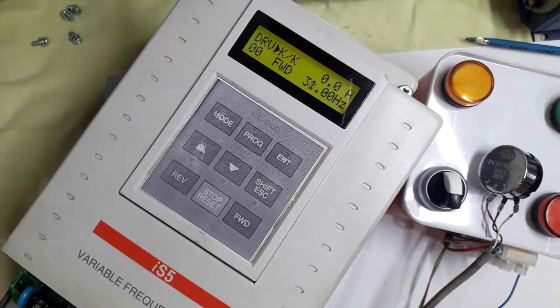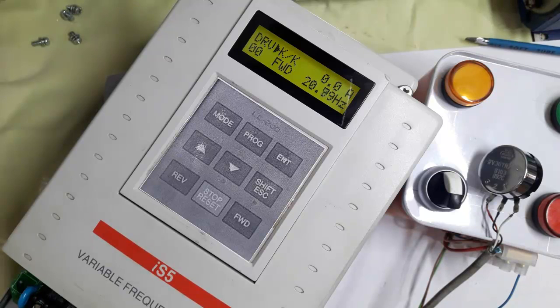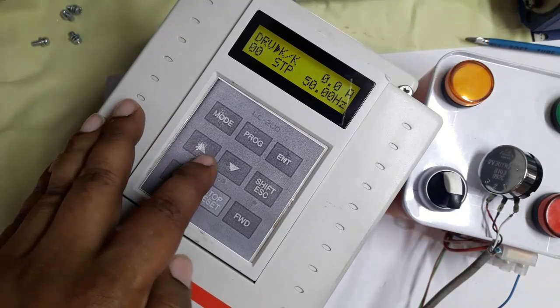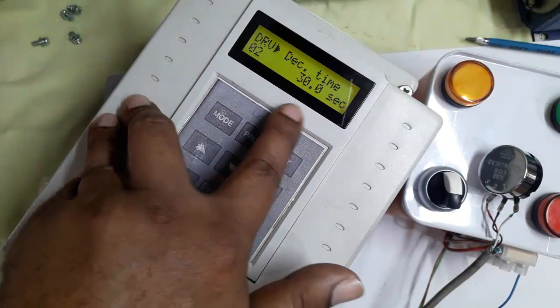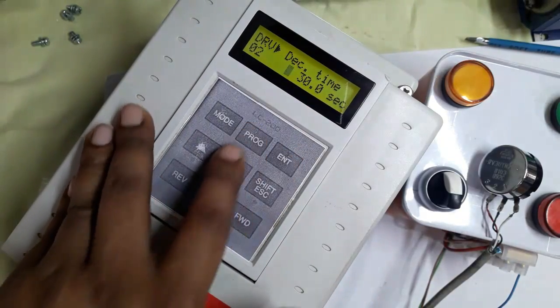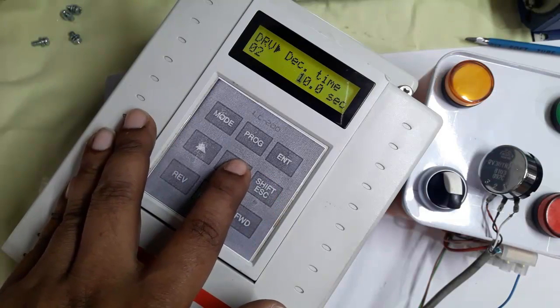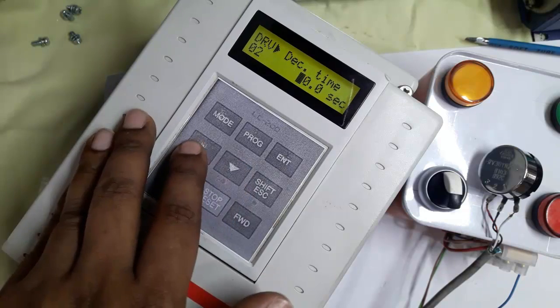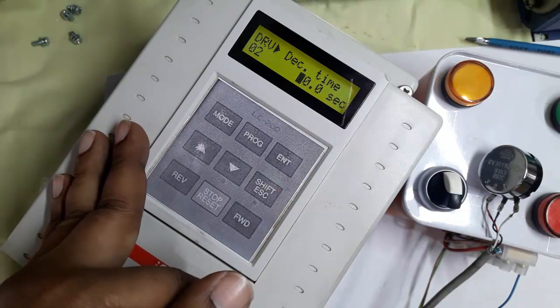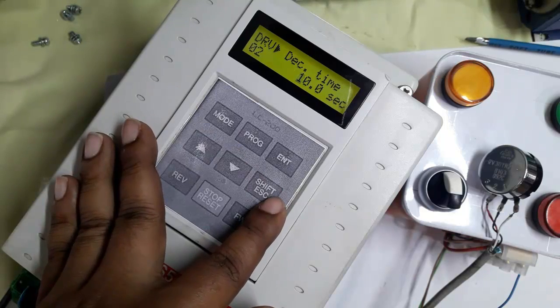After stopping we again set the deceleration time also reduce. We can set here as 10 second, so acceleration time will be 5 second and the deceleration time will be 10 second. That's mean in maximum speed reaches time will be 5 second and after stopping, full time will be 5 second and fully stopped within 10 seconds. So set the deceleration time from 30 second to 10 second. Press enter for saving program.